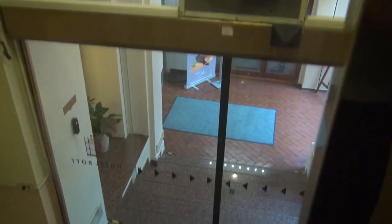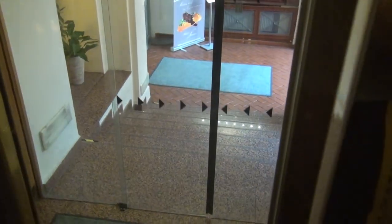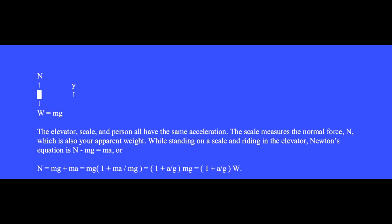What will the bathroom scale read while you are riding in an elevator? When the elevator starts to move downward, we feel lighter for a moment. When the elevator moves at constant velocity, our weight feels normal. When the elevator stops, our knees buckle a little and we feel heavy for a moment. Here is the free body diagram for you standing on the scale in the moving elevator. The elevator, scale, and person all have the same acceleration. The scale measures the normal force N, which is also your apparent weight.